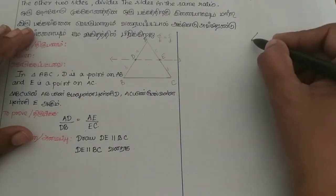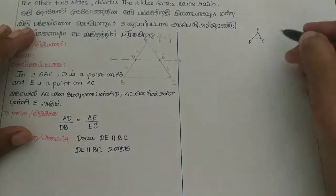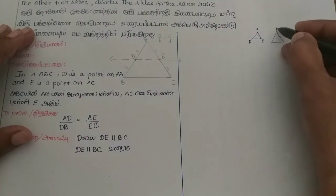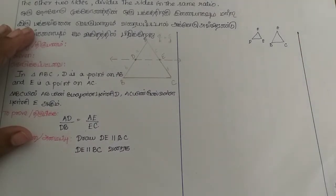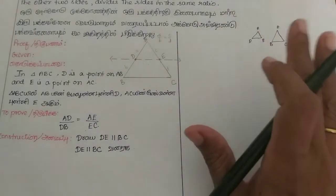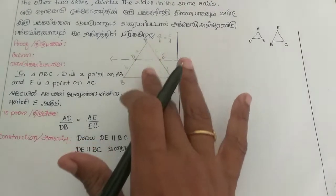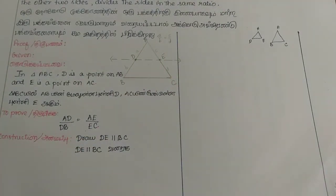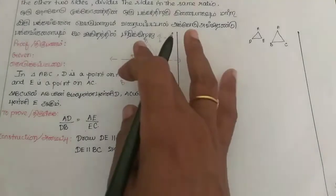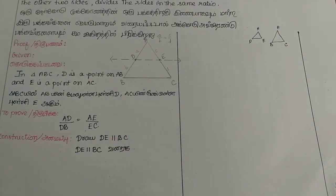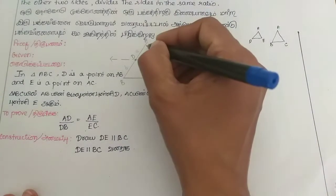Now we have two triangles — triangle ADE and triangle ABC. To prove, we can show these two triangles are similar using AA similarity or SAS similarity.